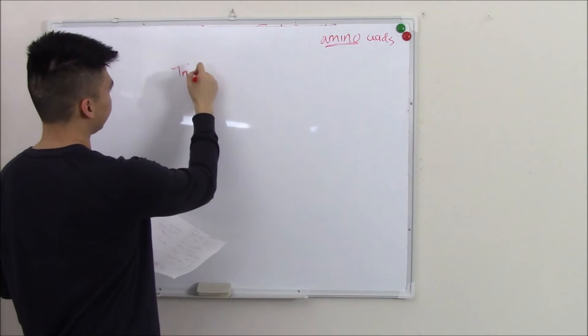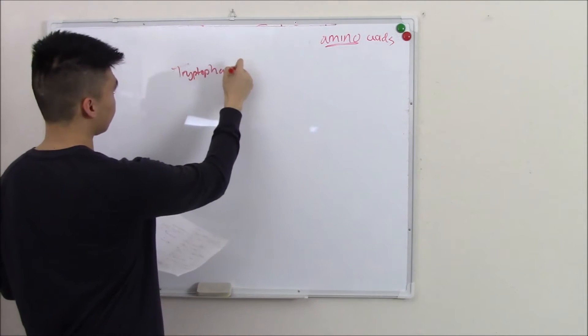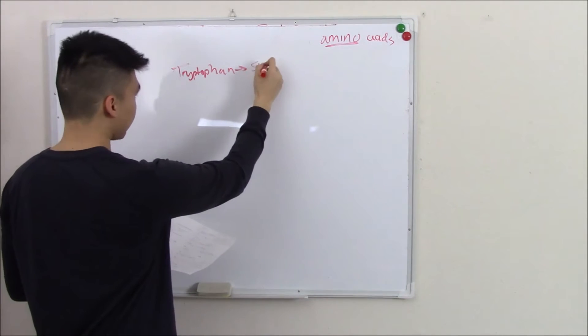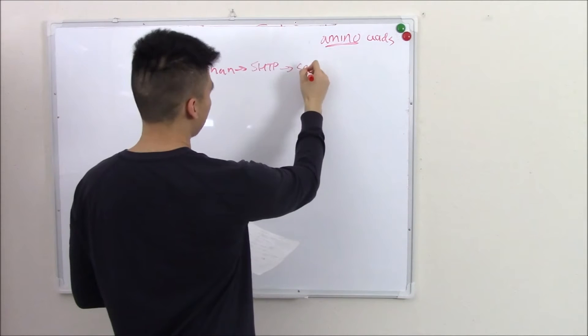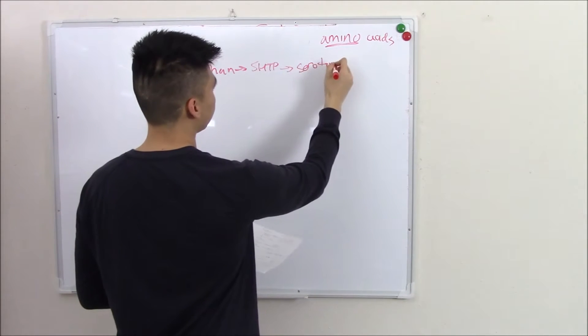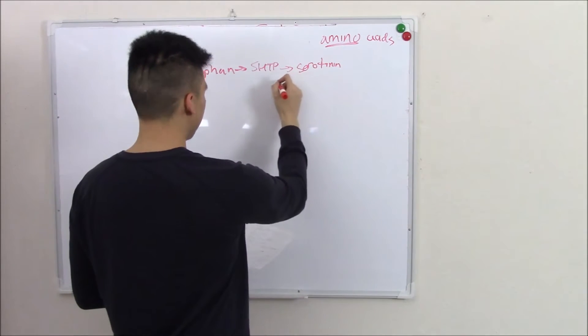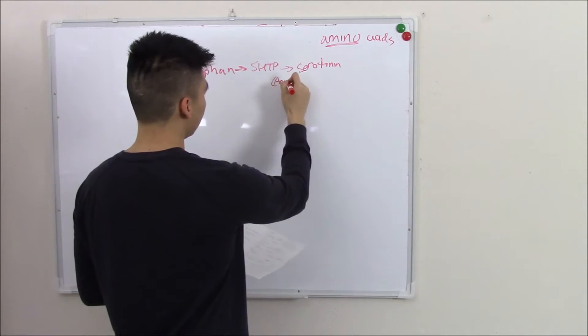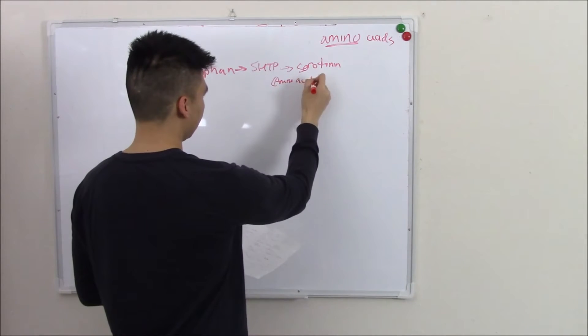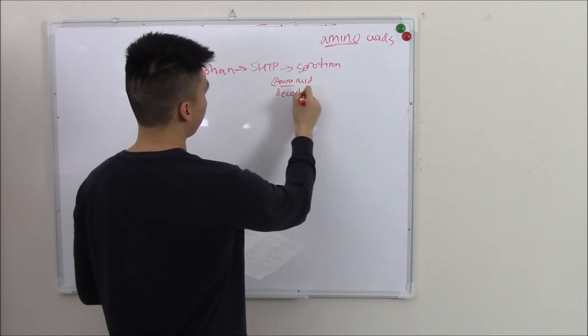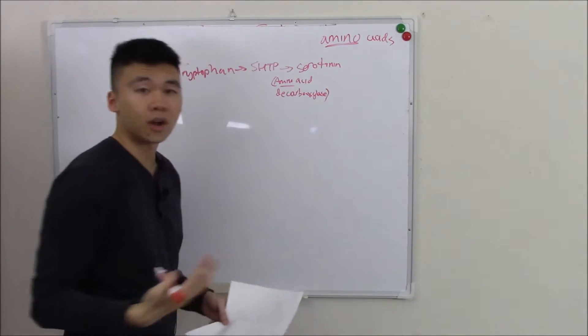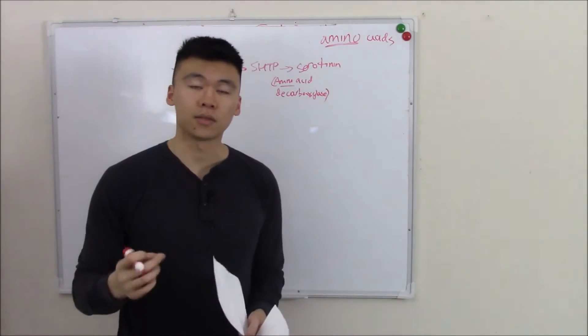So tryptophan becomes 5-HTP which you don't need to know and then eventually becomes serotonin via amino acid decarboxylase. So amino acids really can make a ton of things that we need.